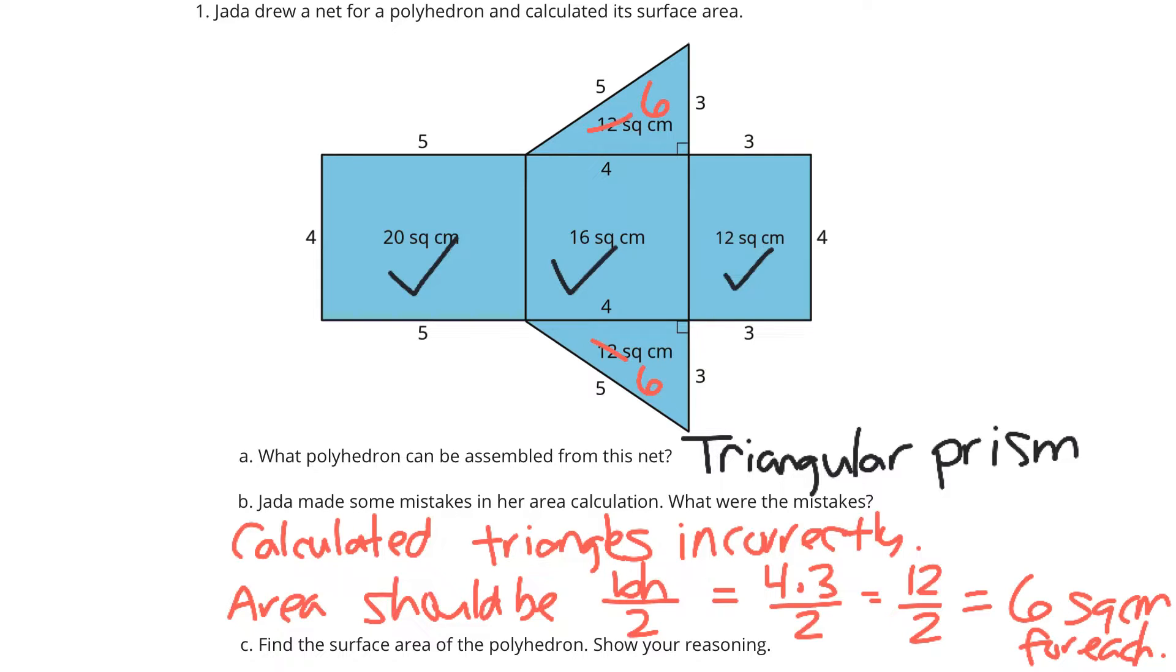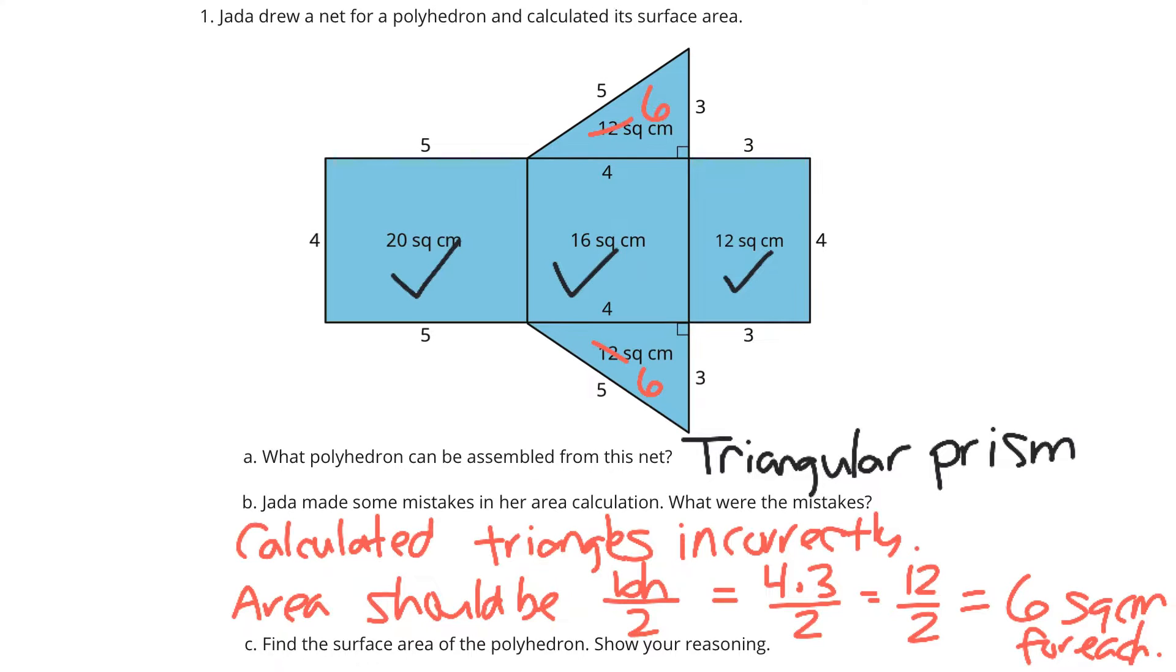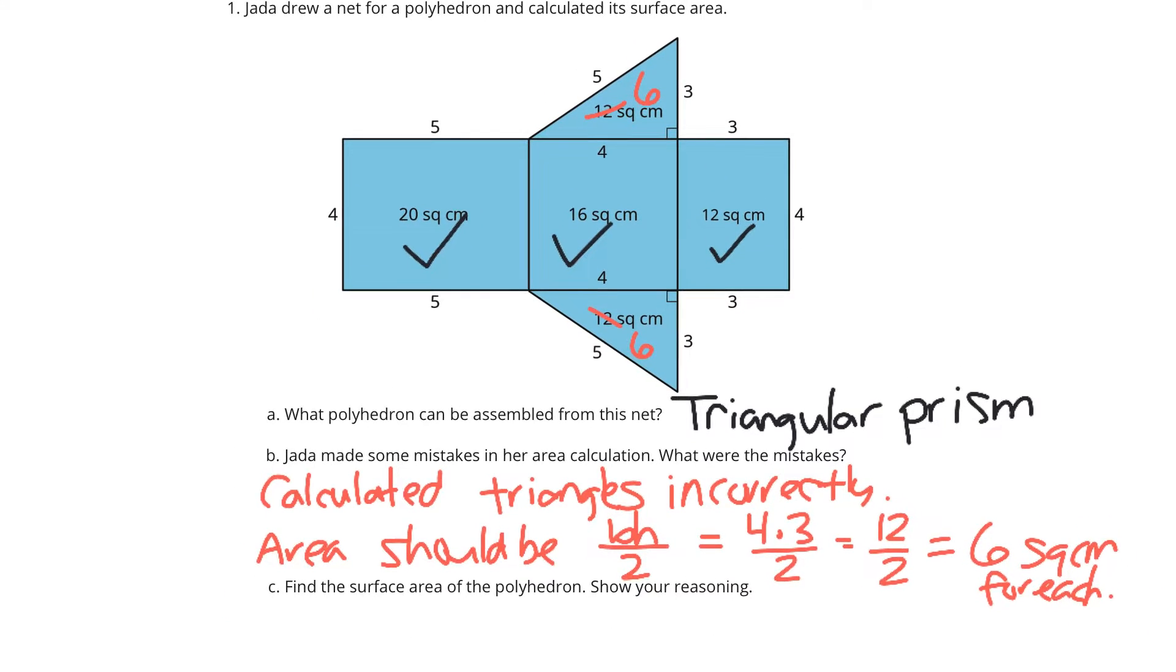And in C, find the surface area of the polyhedron and show your reasoning. Well, we have the rectangle at 20, the square is 16, the other rectangle is 12, and we have our two triangles correctly now at 6 and 6. And when we add up 20 plus 16 plus 12 plus 6 plus 6, we get 60 square centimeters.